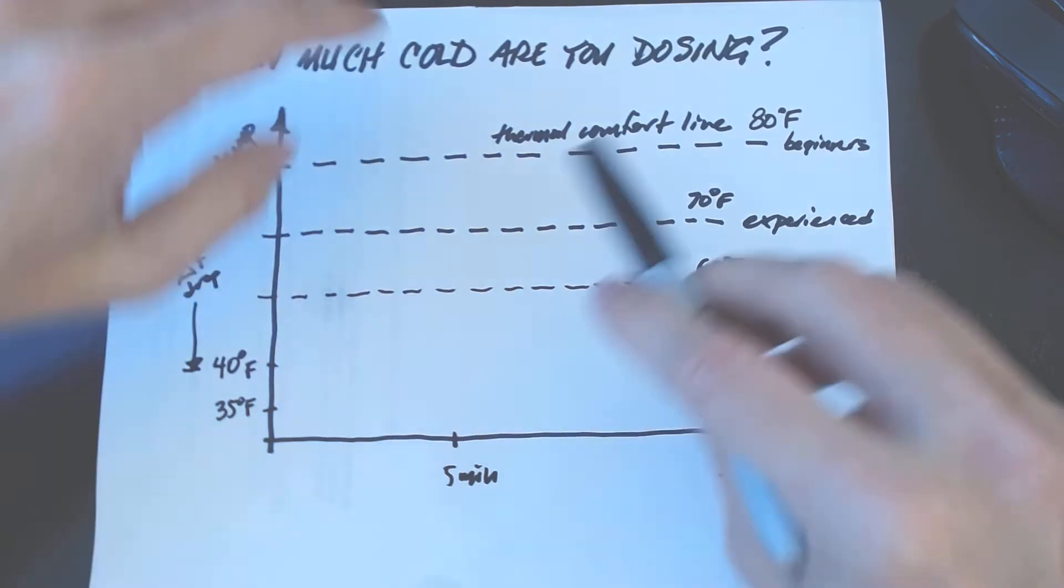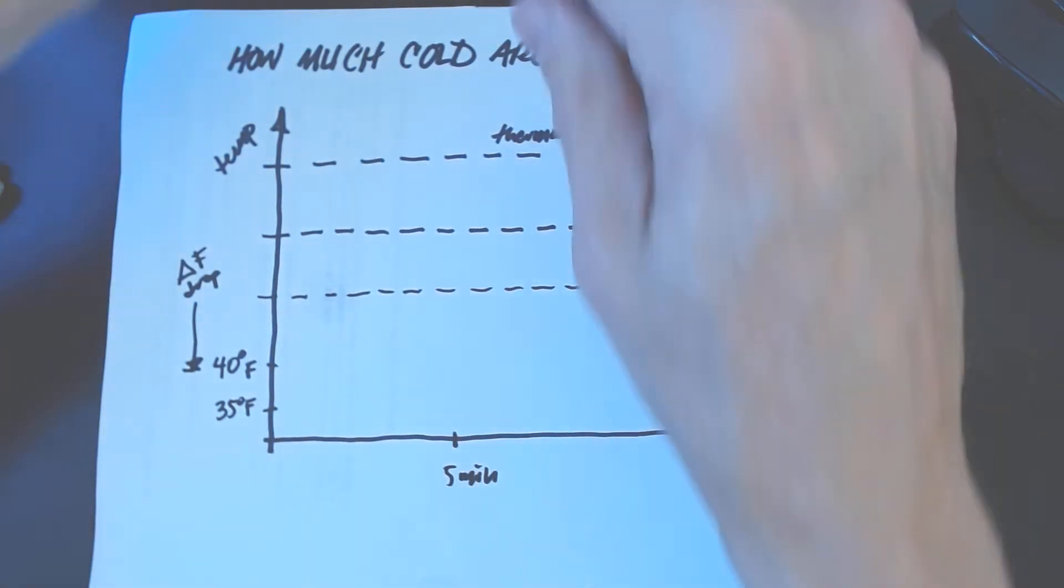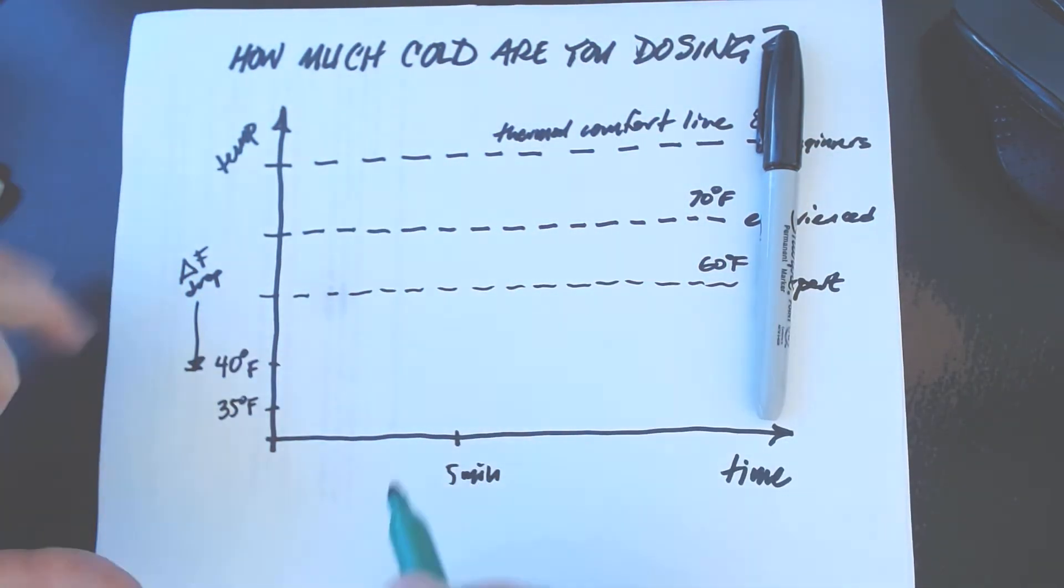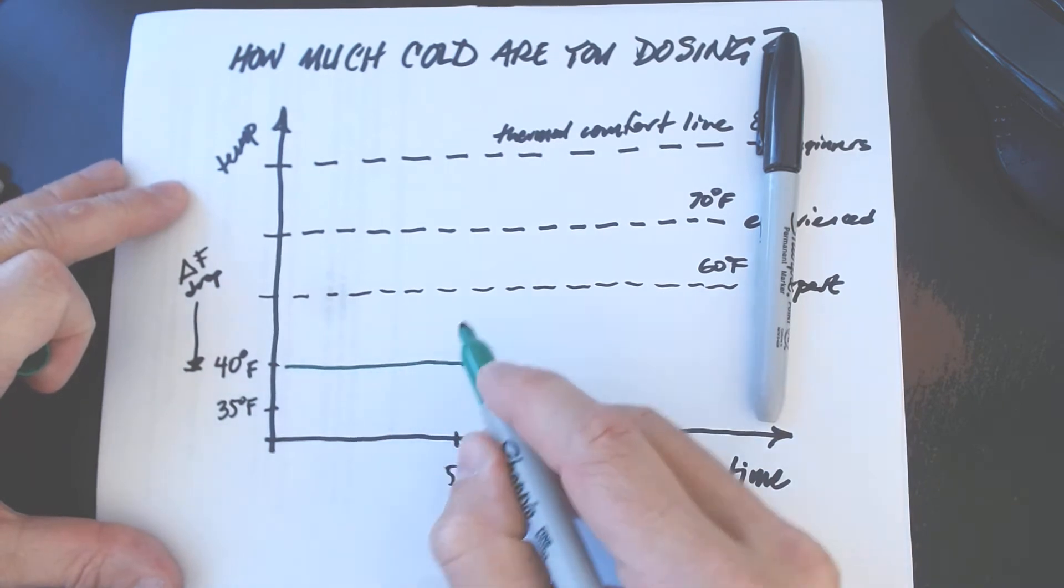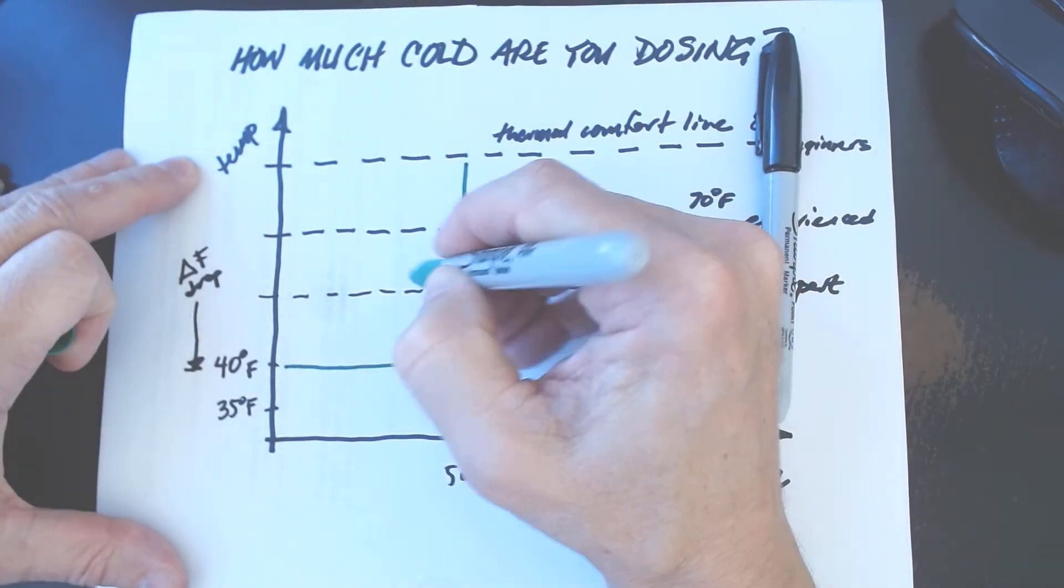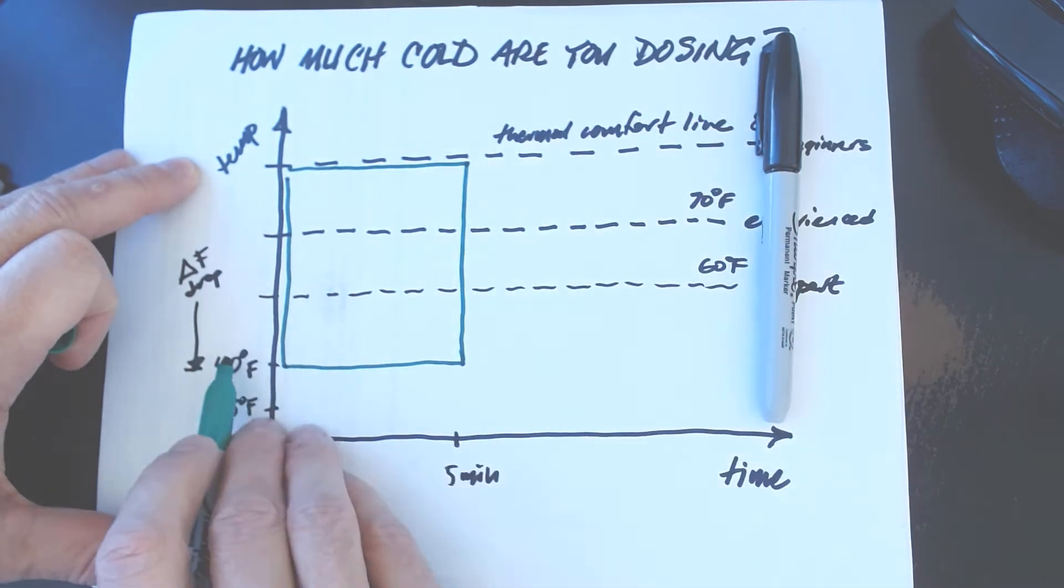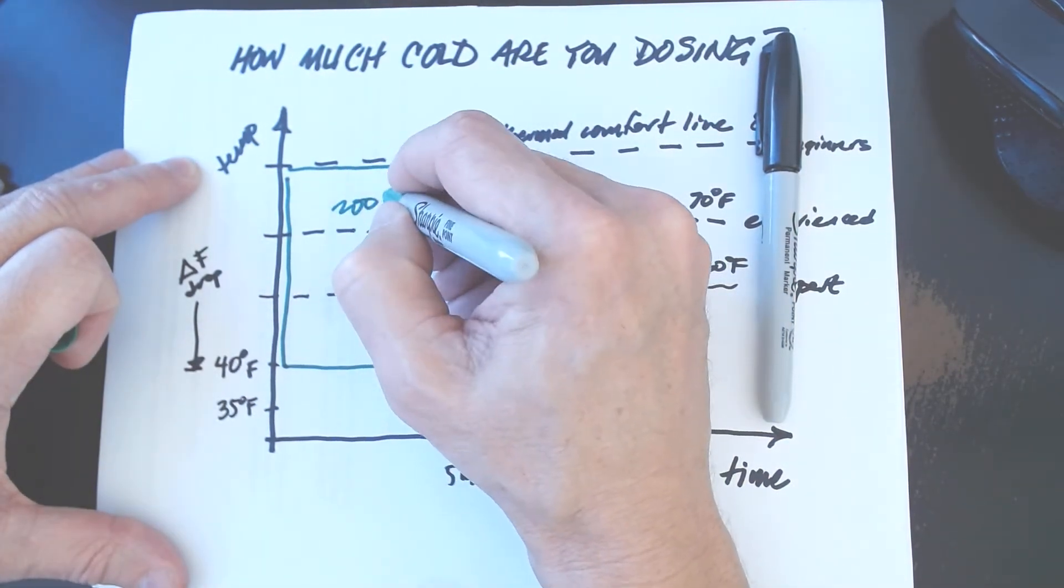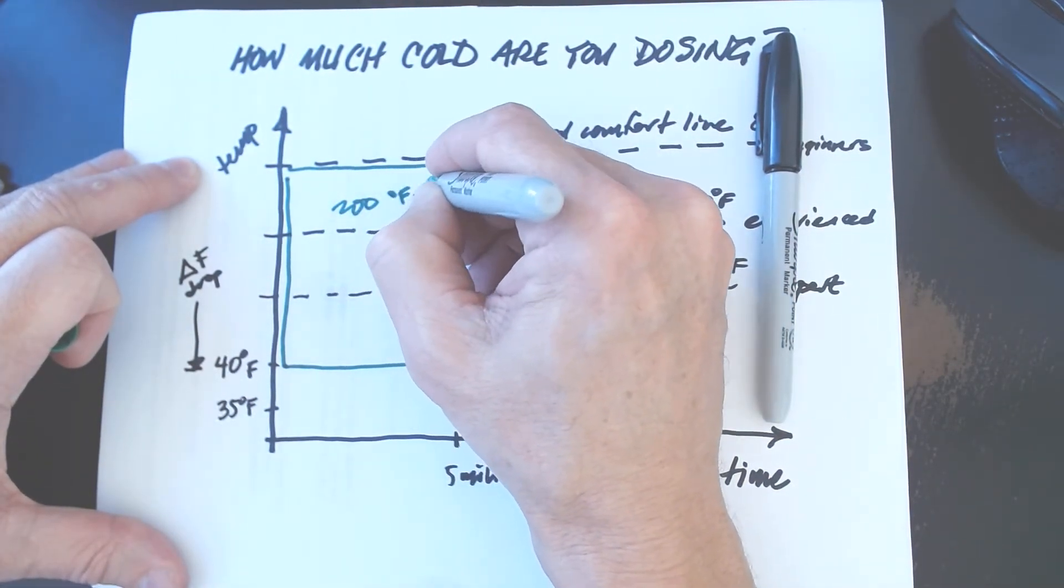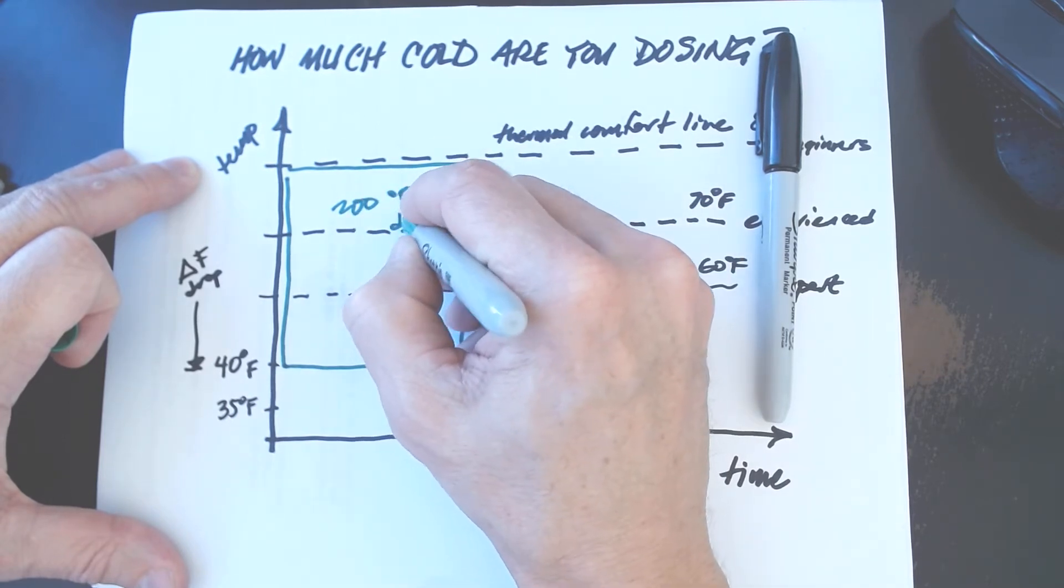So let's take a beginner with a thermal comfort line of 80, a forge with 40 who does a five minute forge. This is what they're getting. 40 times five, that's 200 degree Fahrenheit minutes of dose.